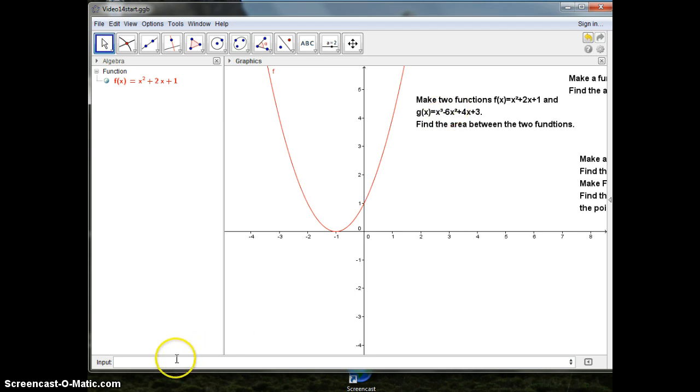Now I have another function, g of x. So I have g of x, and that is equal to x to the 3 minus 6x plus 4x plus 3. Did I do it right? x to 3?